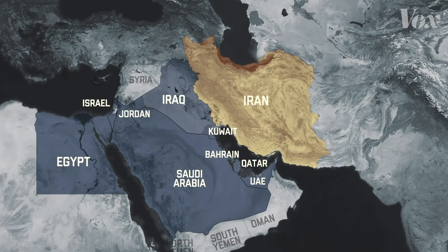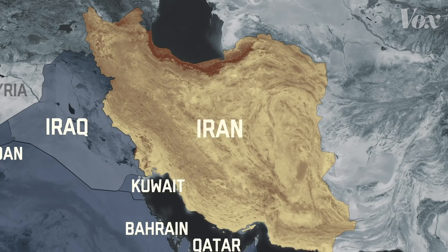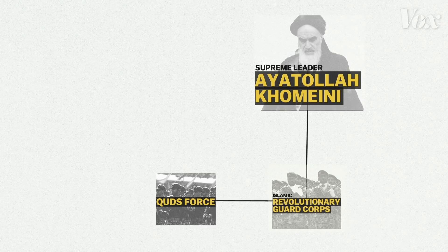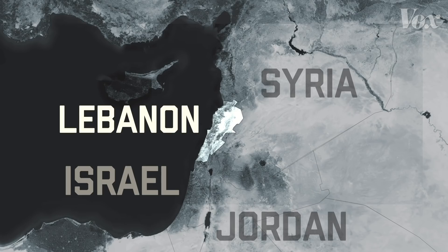Iran first needed a security force to find groups to partner with outside its borders. So in the 80s, it put together an elite unit of soldiers and spies called the Quds Force. They became part of Iran's Islamic Revolutionary Guard Corps, a branch of the military that answered directly to Iran's supreme leader. Next, it needed an opportunity to unleash this force, and it found one in Lebanon.